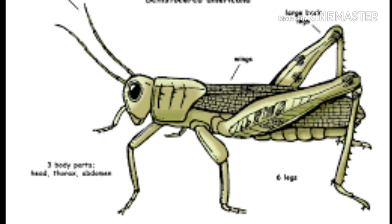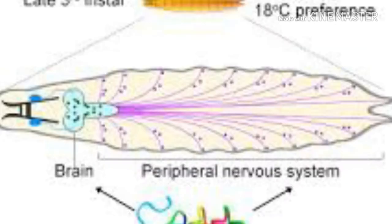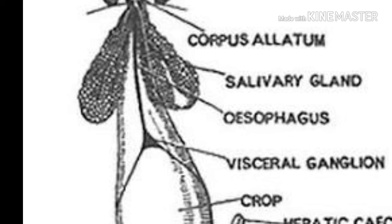The body of arthropods is covered by a chitinous exoskeleton. Body cavity around viscera contains blood, and the coelom filled with blood is called the haemocoel. Blood is haemolymph, and the respiratory pigment is haemocyanin, which contains copper. The digestive tract is complete and they can feed upon all kinds of food substances.